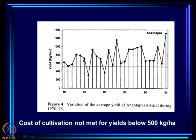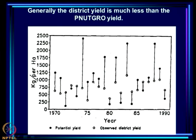Looking at the district yield for the Anandpur region, it varies a great deal. The maximum is very seldom more than 1000, and only twice has it reached 1200 or 1300. Low yields are also quite frequent. Yields below 500 imply that even the cost of cultivation is not met, so these should be considered as crop failures.